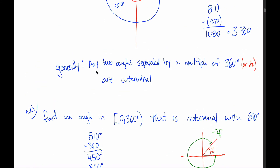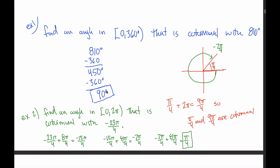From this video, what I'd like you to get is: given two angles in degrees, determine if they're coterminal by checking whether the difference is a multiple of 360 degrees. If the angles are in radians, check if the difference is a multiple of 2 pi. The other thing I'd like you to be able to do is, given any angle in degrees or radians that is not between 0 and 360 degrees or 0 and 2 pi, find a coterminal angle that is in that interval by adding or subtracting 360s or 2 pi's until you end up in that range.